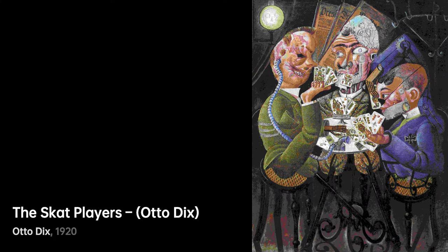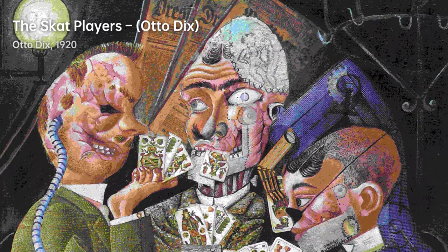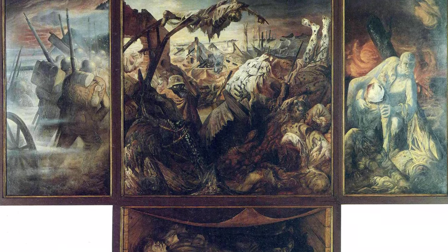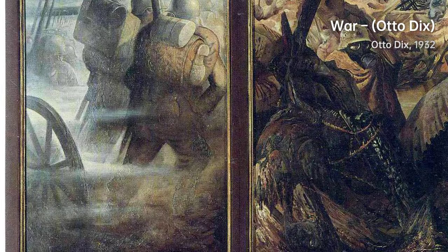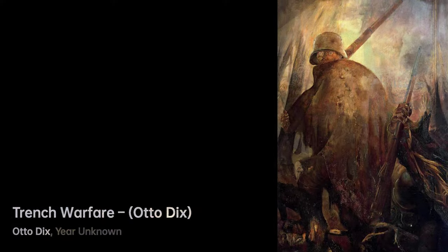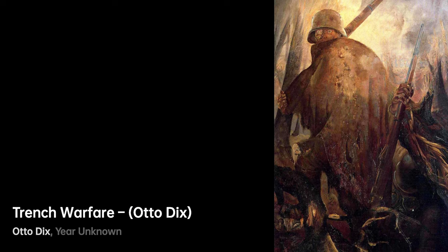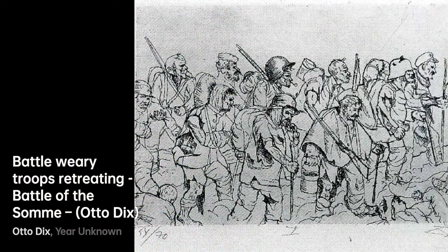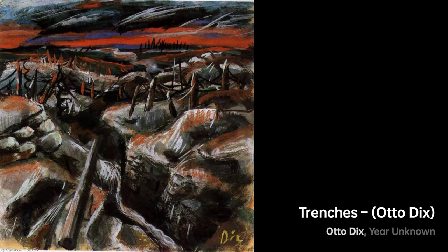The outbreak of World War I in 1914 had a profound impact on Otto Dix's life and art. He served as a machine gunner in the German army and experienced the horrors of war firsthand. The war deeply affected him, leaving a lasting impression on his artistic expression. His works from this period often portrayed the brutality, suffering, and psychological effects of warfare. Through his art, Dix sought to expose the true nature of war, challenging the glorified and romanticized narratives often associated with conflict, making him a leading figure in the New Objectivity movement.